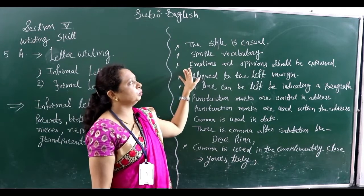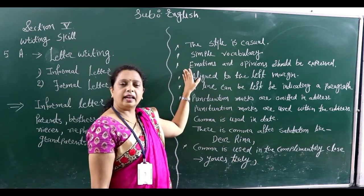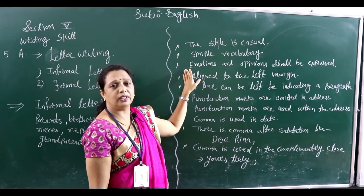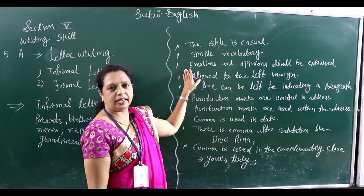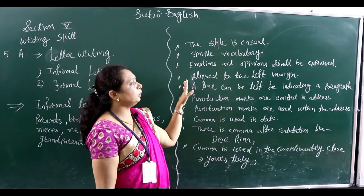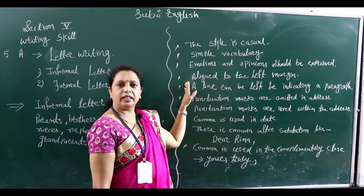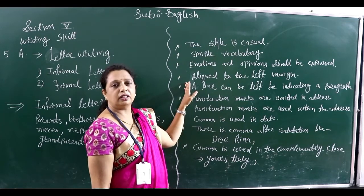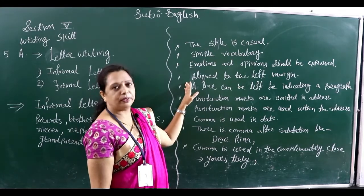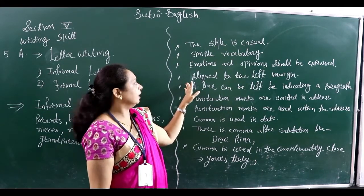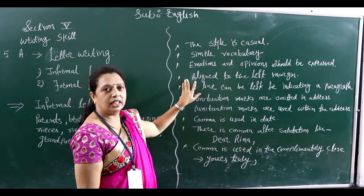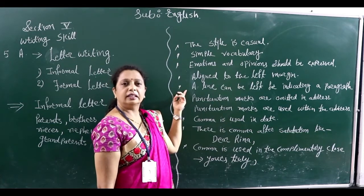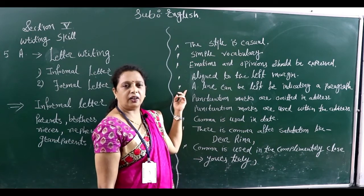Emotions and opinions should be expressed. In this category of letter, we only express our ideas, emotions, and feelings to the person to whom we write. Also, align to the left margin — the whole letter is written aligned to the left margin. For indicating a new paragraph, we leave one line, which shows that the next paragraph starts after that.